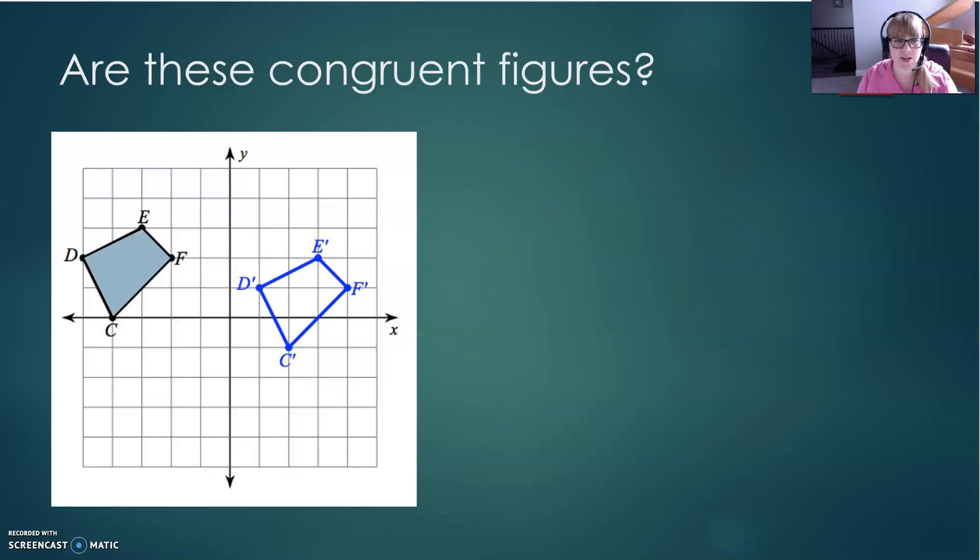So now that we have this idea of congruence, are these two figures congruent? If we can obtain one from the other through a series of translations, rotations, and reflections, then it would be congruent. Let's see, can we get this figure to become this figure? All we have to do is translate it by sliding it to the right and then sliding it down. So yes, those figures are congruent because we can get from one to the other through a translation.